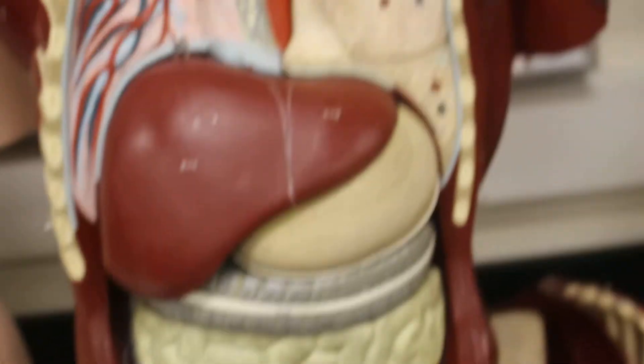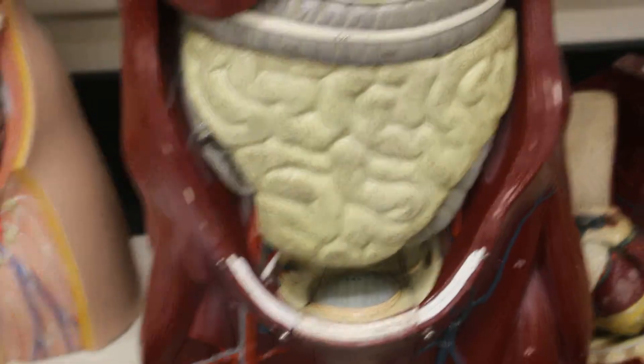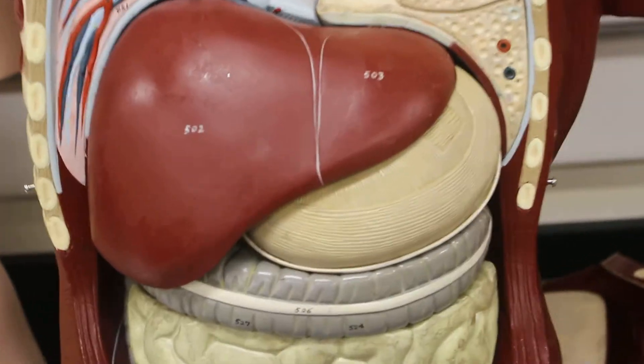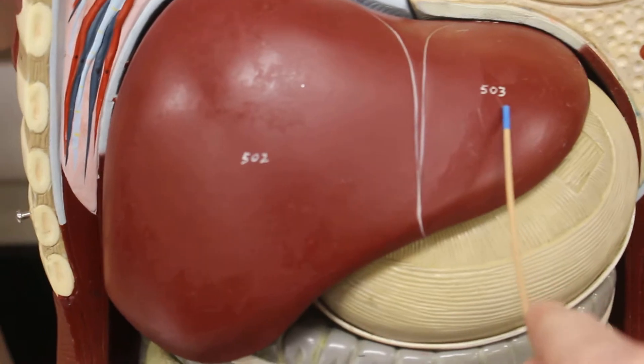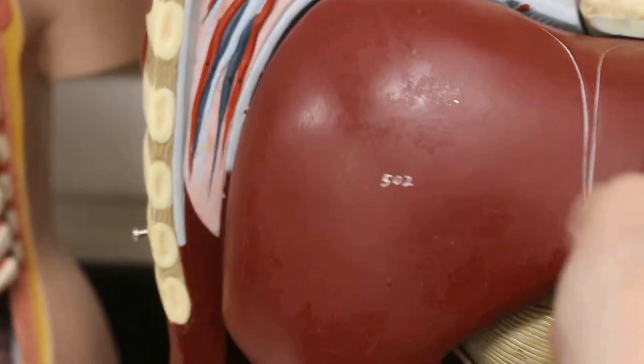Then we get down to the abdominal cavity. And in the abdominal cavity we have a ton of structures. Here is the liver with the right lobe and left lobe. On the bottom of the liver is the gallbladder there in green.